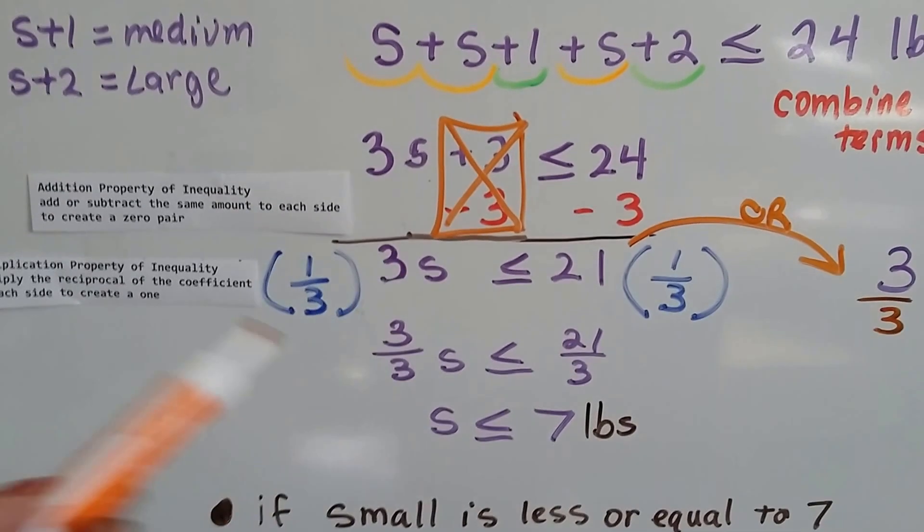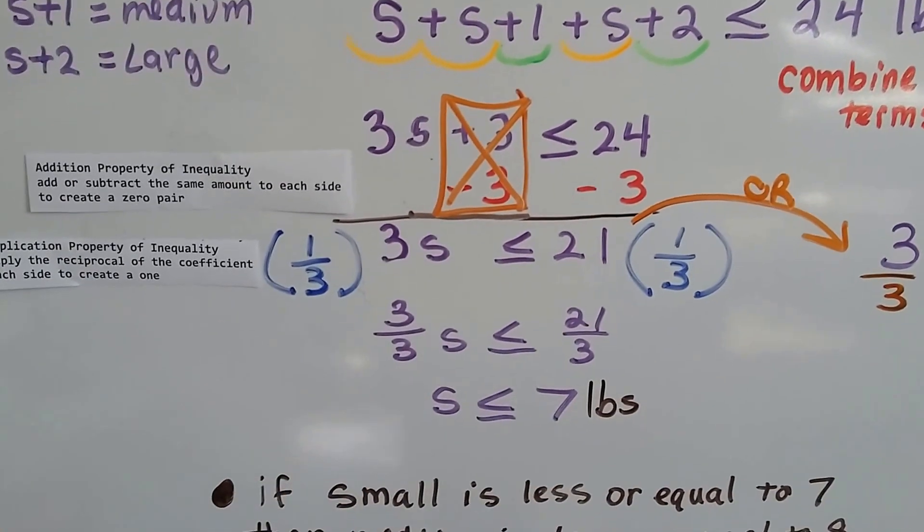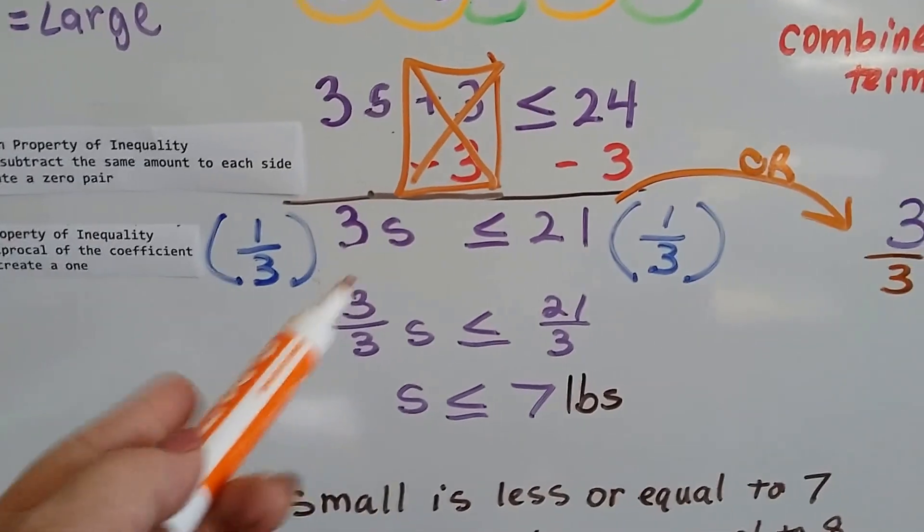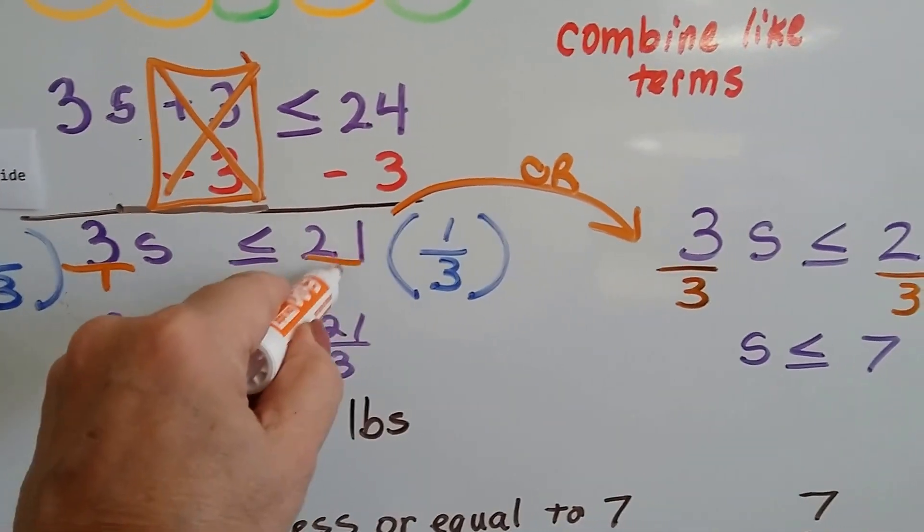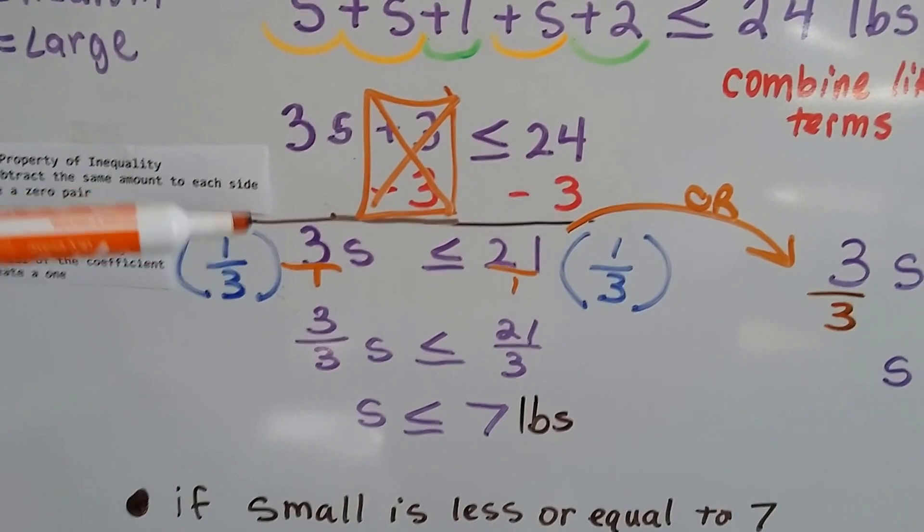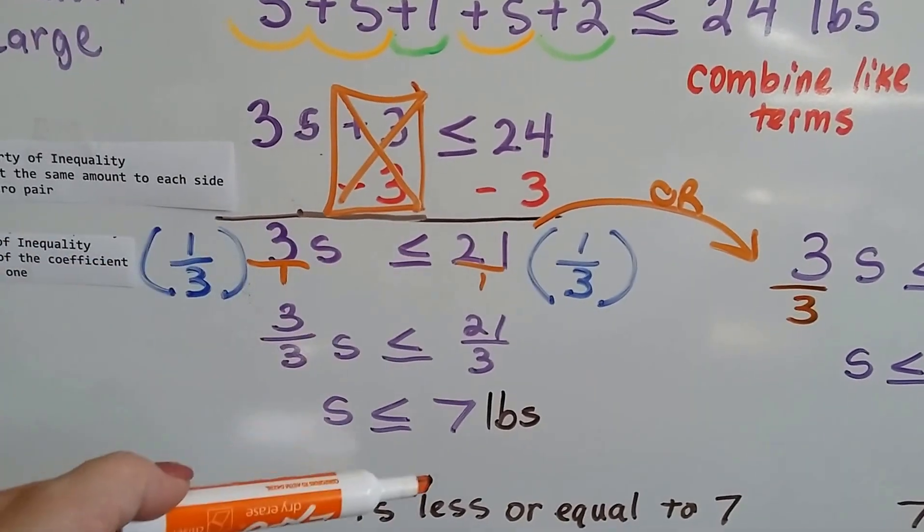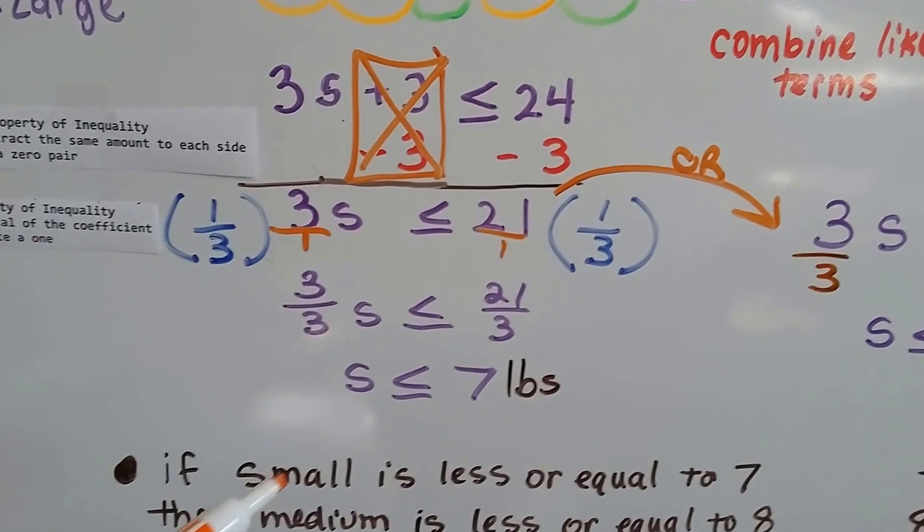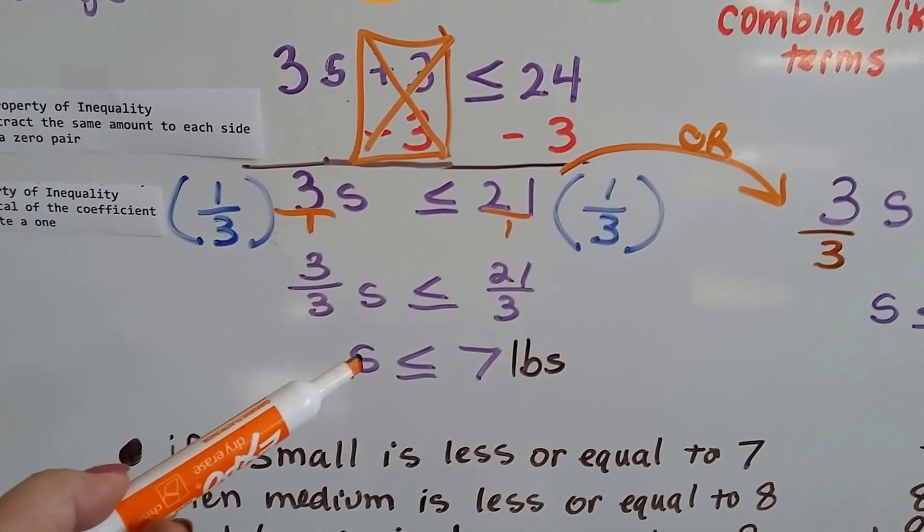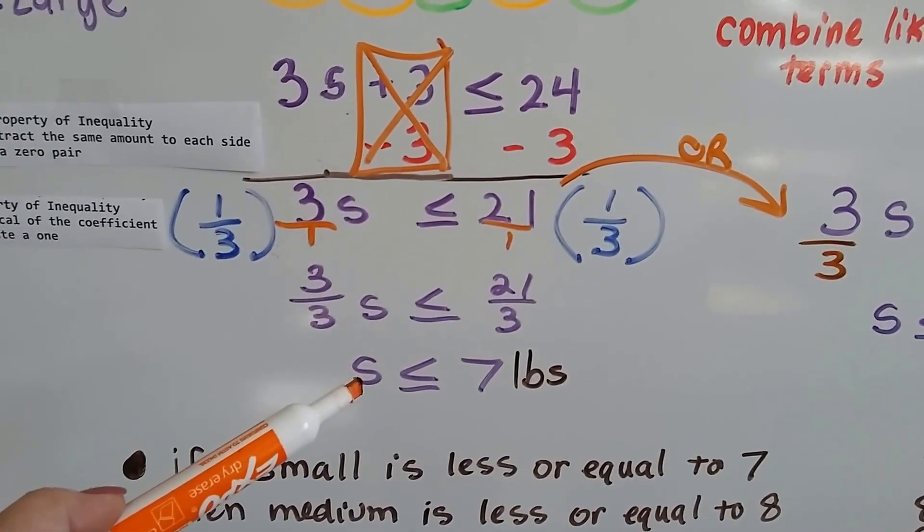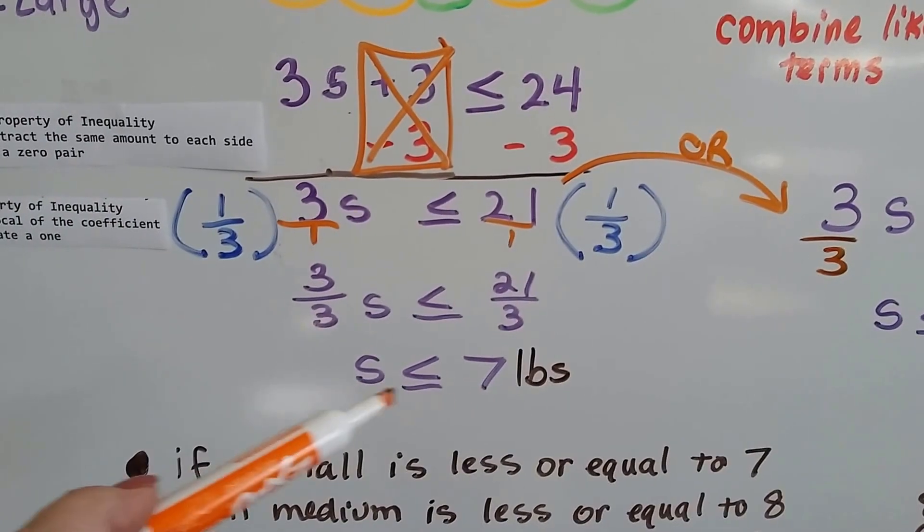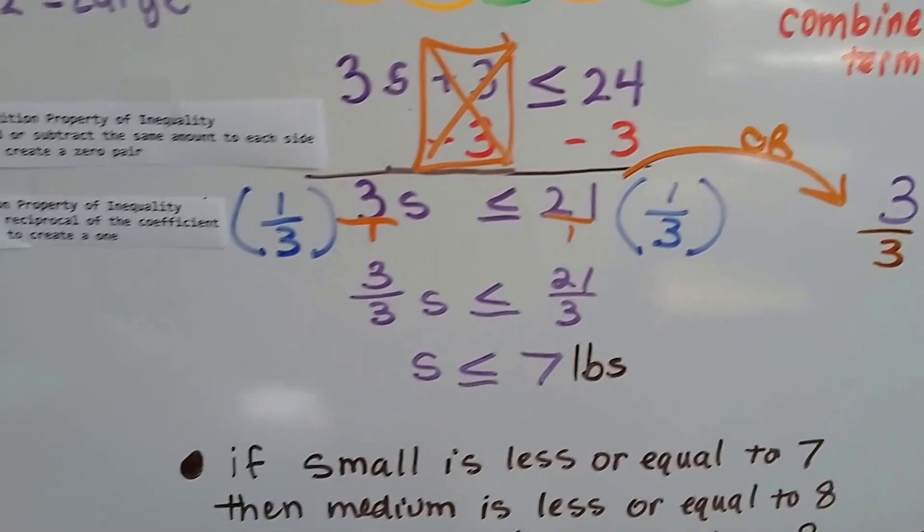Now, we use the multiplication property of inequality to multiply the reciprocal of the coefficient, the upside-down fraction version of this coefficient, to each side to create a 1 in front of the variable. So this is technically 3 over 1, and that's 21 over 1. So we've got 3 over 3s is less than or equal to 21 over 3, which simplifies to a 7. So we know the small one is at most 7 pounds or equal to 7 pounds.